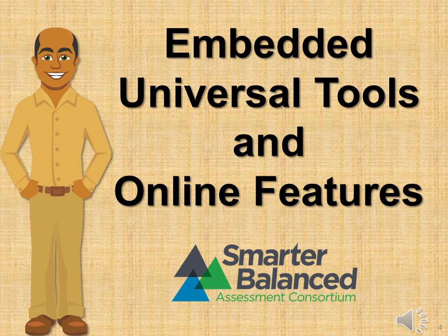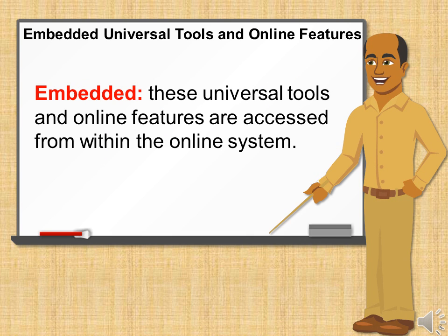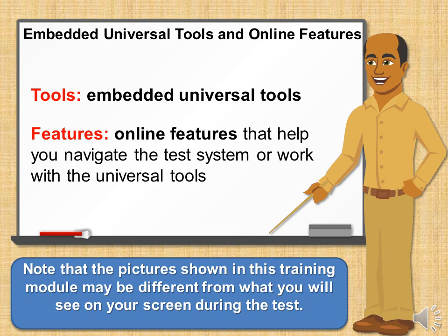This training module will help prepare you for using the embedded universal tools and online features when taking the online assessments. Embedded means these universal tools and online features are accessed from within the online system. These embedded universal tools and online features will help you do your very best in answering the test questions. When you hear the word 'tools' throughout the module, we are referring to embedded universal tools. When you hear the word 'features,' we are referring to online features that help you navigate the test system or work with the universal tools. These tools and features are available to all students.